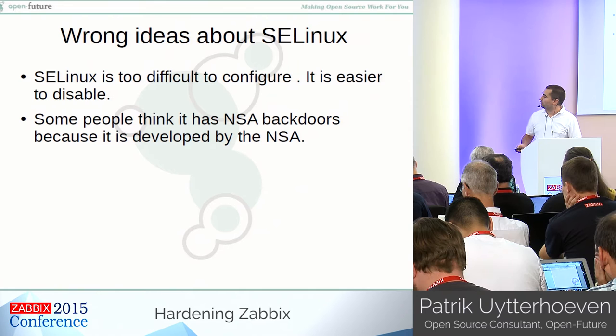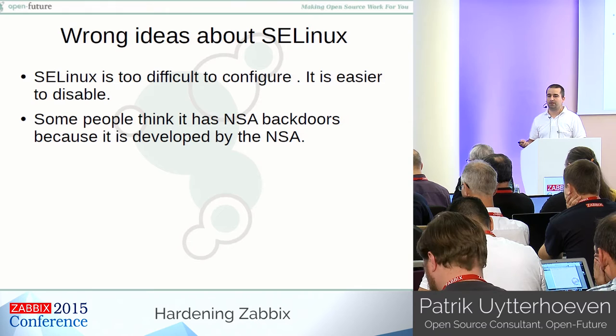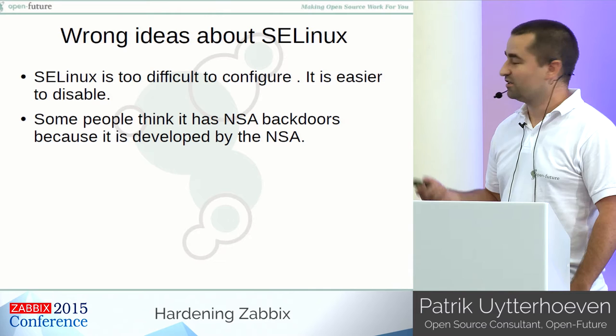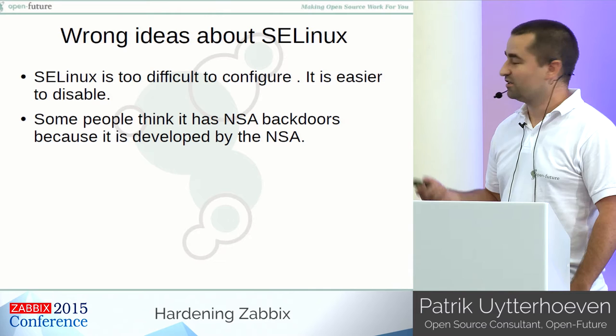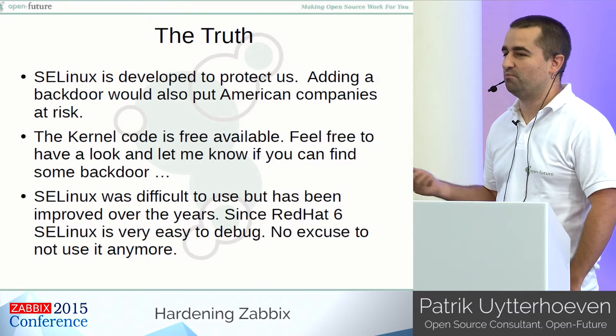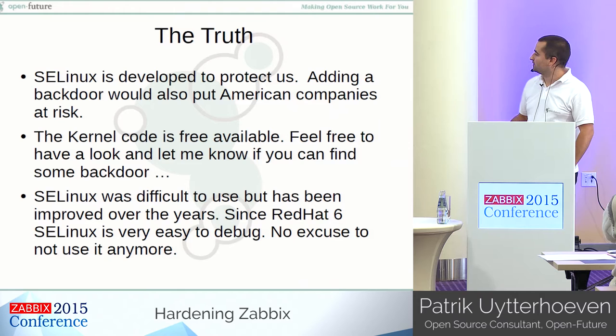So the wrong ideas about SELinux: it's too difficult to configure, it's easier to disable it, we don't need it at all, it's too much effort, and SELinux doesn't add any security. Those are all wrong ideas. Some people think that it has NSA backdoors because it has been developed by the NSA — that's a stupid thing. NSA developed it because they want to have a more secure box, so they wouldn't put backdoors in their own software. The kernel code is freely available, so feel free to have a look and let me know if you can find any backdoors.